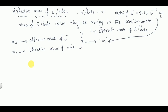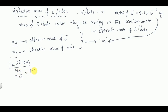The most widely used semiconductors are silicon and germanium, so we need to remember the effective mass of both for electrons and holes. For silicon, mn/m = 1.08, so mn = 1.08 × 9.1 × 10⁻³¹ kg. This is the effective mass of the electron in the case of silicon.